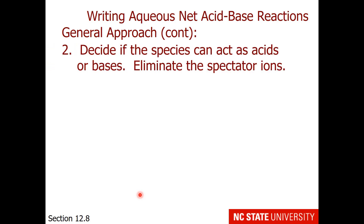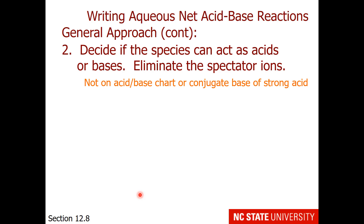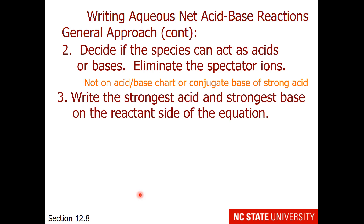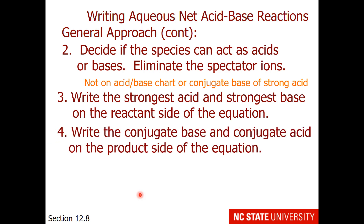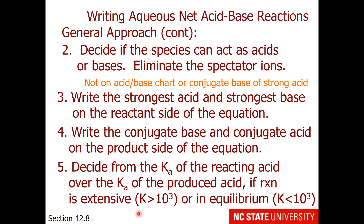Step 2: we decide if the species can act as an acid or a base, and we eliminate the spectator ions. Spectator ions are species not found on the acid-base chart, or the conjugate base of a strong acid. To write our net reaction, we write the strongest acid and strongest base on the reactant side, and the conjugate base and conjugate acid on the product side. We then calculate the equilibrium constant as the Ka of the reacting acid over the Ka of the produced acid. If the equilibrium constant is greater than 1000, we use an arrow to the right; otherwise we use an equilibrium arrow.